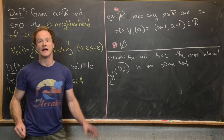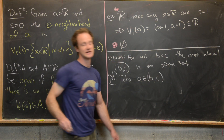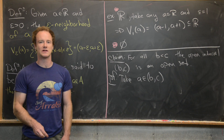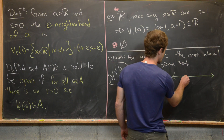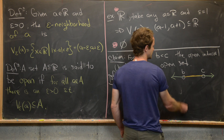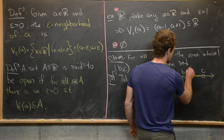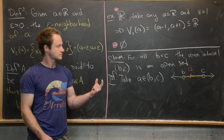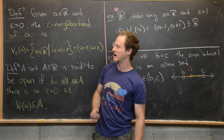To prove this, we take some arbitrary a in the set (b, c) and construct an epsilon so that the epsilon neighborhood lies inside this set. Drawing a picture: we have b and c on the real number line, thinking about all points between b and c not including the endpoints. We pick an arbitrary a in the middle, and we want to find an open interval centered at a completely contained in (b, c) — that's exactly finding one of these epsilon neighborhoods.